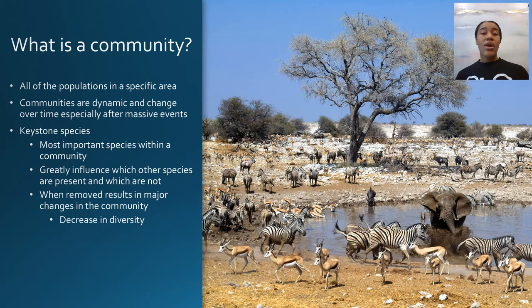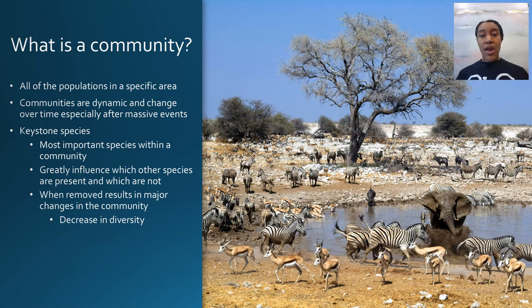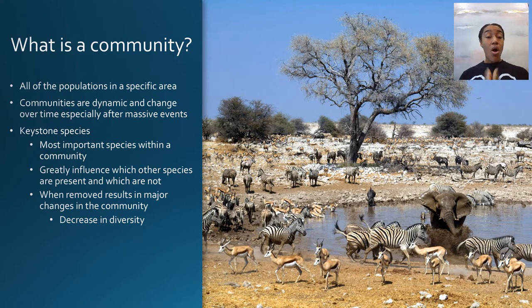The keystone species is not necessarily always a predator. The book also mentions a grazing animal in the U.S. Northwest — if you remove this animal from the environment, one particular type of grass takes over and chokes out all other types. But if you reintroduce that grazing animal, it keeps the grass under control. When you remove a keystone species, you decrease diversity and drastically change the dynamics. All species are important, but keystone species are the most critical.